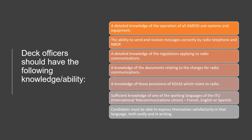Technical officers should have the following knowledge and abilities: detailed knowledge of the operation of all GMDSS subsystems and equipment; the ability to send and receive messages directly via radiotelephone and NBDP; detailed knowledge of the regulations applying to radio communications; knowledge of the documents related to charges for radio communications; knowledge of SOLAS provisions relating to radio; and sufficient knowledge of one of the working languages of the ITU — which is French, English, or Spanish. Candidates must be able to express themselves satisfactorily in that language both orally and in writing.